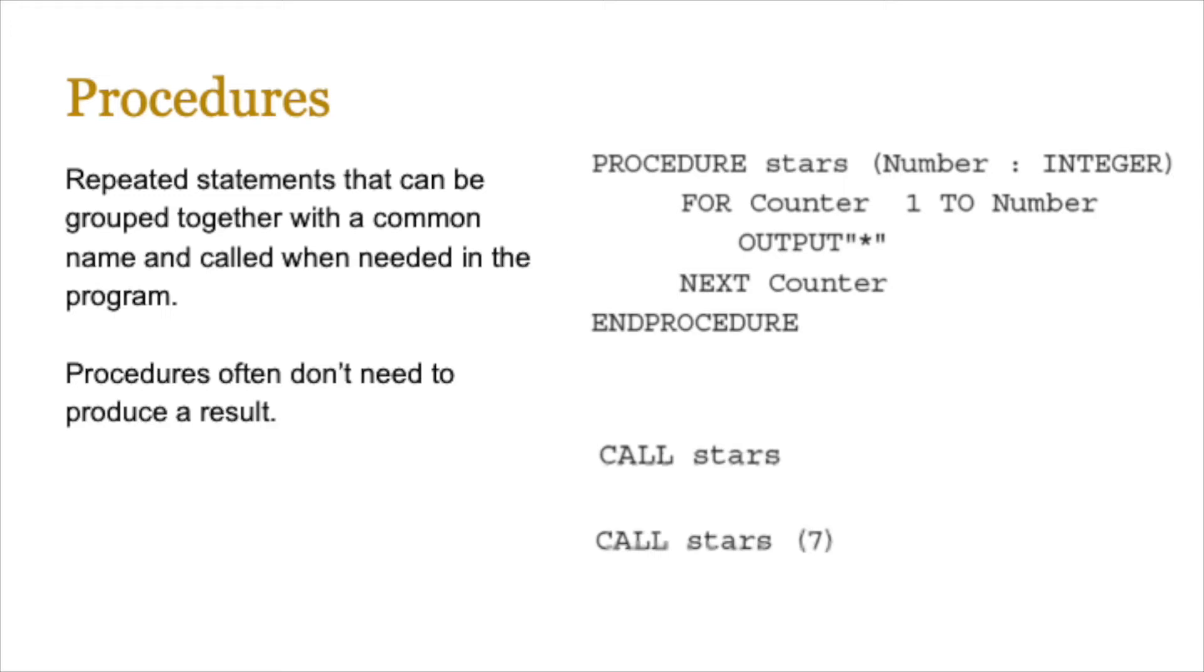In pseudocode, you'd probably be looking at a procedure, stars. And then you're going to simply say, well, this is going to have a parameter, which is going to be a number in integer form. That's the argument that's going to be passed to it from the main program at some point. So you define that in the header statement. And then you can put any code that you want in. Just remember that whenever you're writing a procedure in pseudocode, you need to write end procedure.